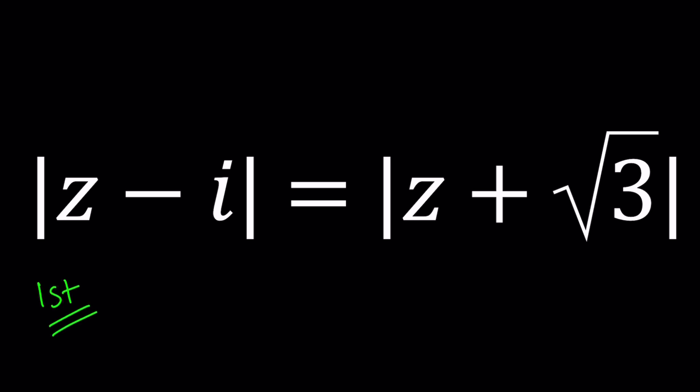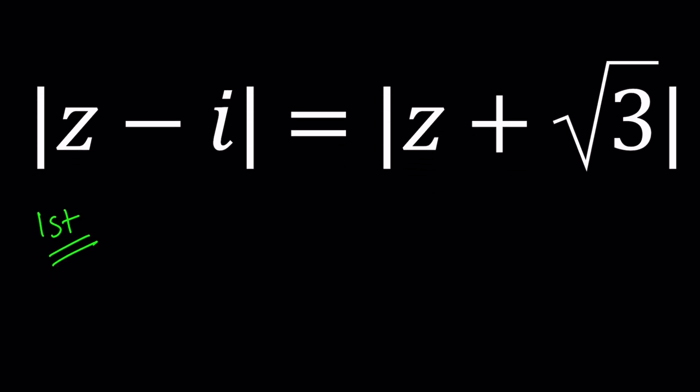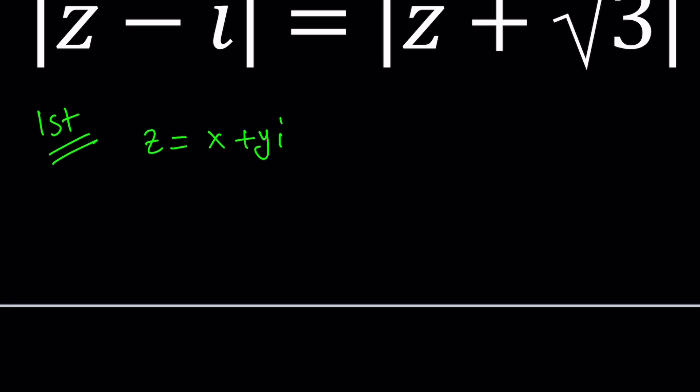First method, which is pretty standard for locus problems like this one, is to replace z with x plus yi, or A plus bi. A plus bi is the name of this channel and that's my first choice, but for locus problems, since we're going to be talking about a graph on the coordinate system or the coordinate plane, we want to stick with x and y, which is more common. Sorry A plus bi, we're going to use x plus yi this time.